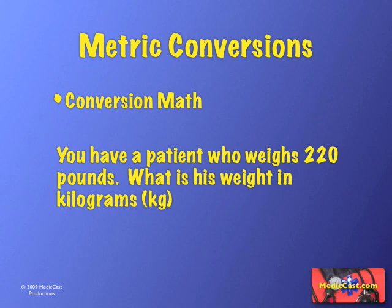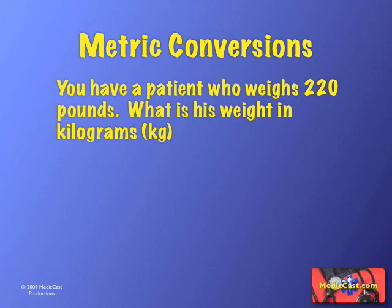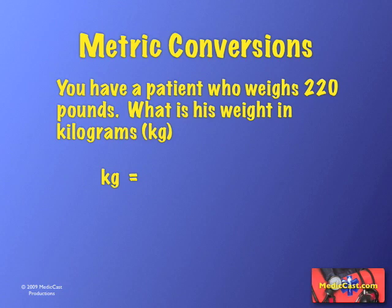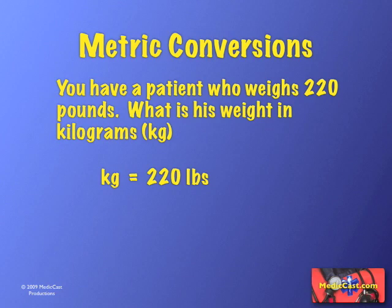Let's look at that question again and think back to what we just saw as our formula. You have a patient who weighs 220 pounds — what is his weight in kilograms? We need to find out the weight in kilograms, so first thing we do is put what we're looking for on the left-hand side: kilograms equals. Then on the right-hand side we put in the items we know — this patient weighs 220 pounds. Now we add in our conversion. We know 2.2 pounds per kilogram, but I'm going to flip it over and say 1 kilogram per 2.2 pounds.